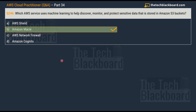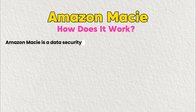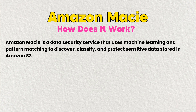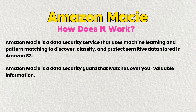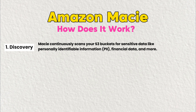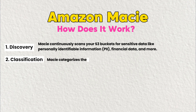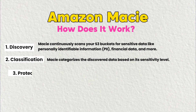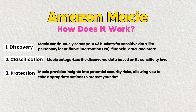Amazon Macie is a security service that uses machine learning and pattern matching to discover, classify, and protect sensitive data stored in Amazon S3 — essentially a data security guard. Step one is discovery: Macie continuously scans your S3 buckets for sensitive data such as personally identifiable information (PII), financial data, and more. Step two is classification: Macie categorizes data based on your company's requirements. Step three is protection: Macie provides insights into potential security risks, allowing you to take appropriate actions.